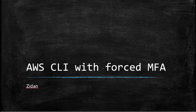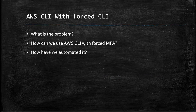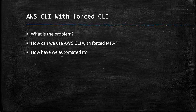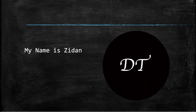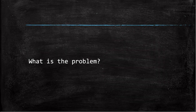Last time we talked about how we forced our employees to enable their multi-factor authentication, and we mentioned that you will face a problem with AWS CLI. Today I'm going to talk about what the problem is and how we can use AWS CLI with forced MFA. At the end of this video I'll tell you how we automated it. My name is Zidane and this is Daily Time.